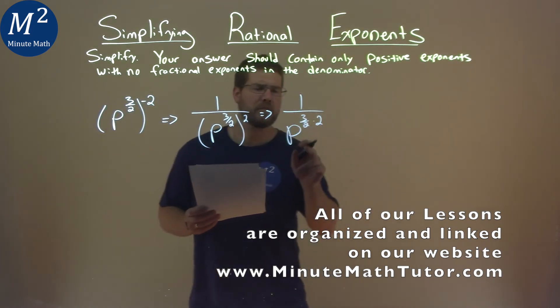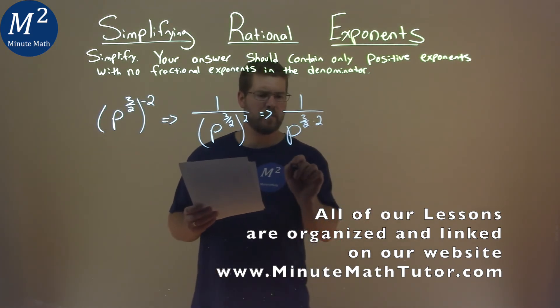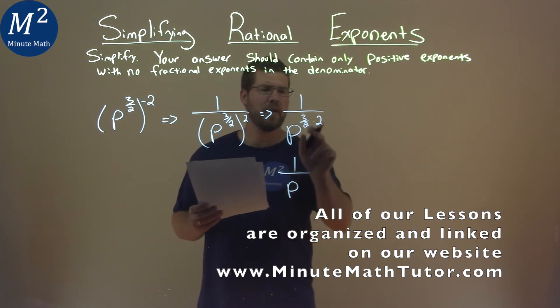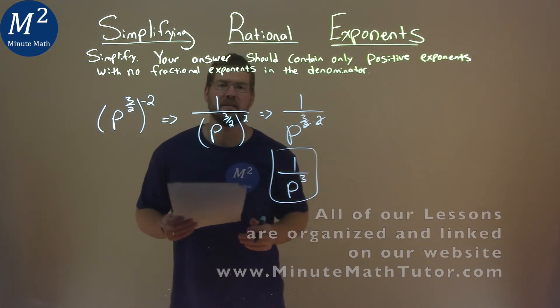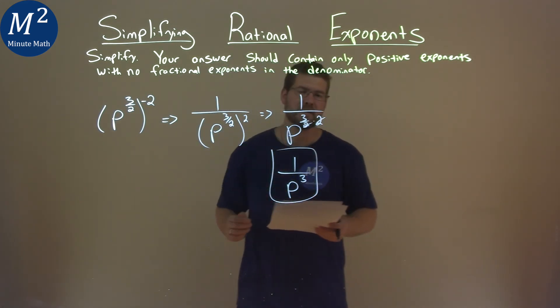Well, 3 halves times 2, what does that come out to be? So we have 1 over p, 3 halves times 2, well, the 2's cancel, and we're left with just a 3. And so our final answer here is actually just 1 over p to the 3rd power.